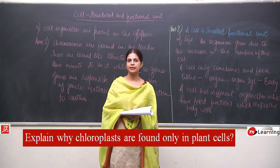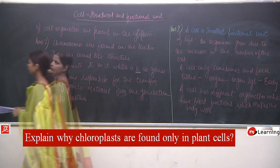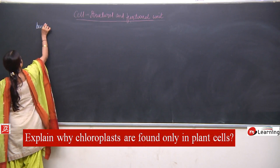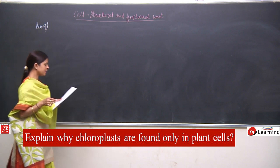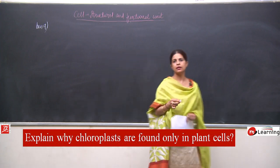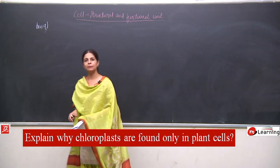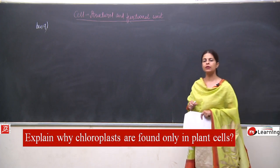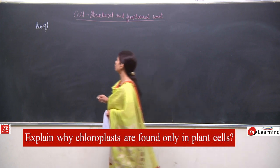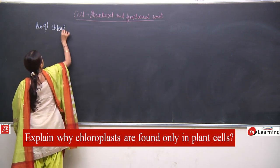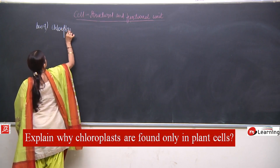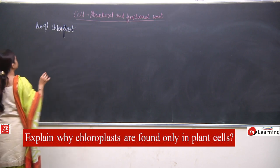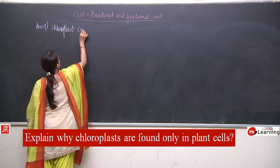For answer number 9: chloroplasts are found in plant cells because plants are autotrophs — they make their own food and do not depend upon any other organism for their food. Chloroplasts contain chlorophyll.